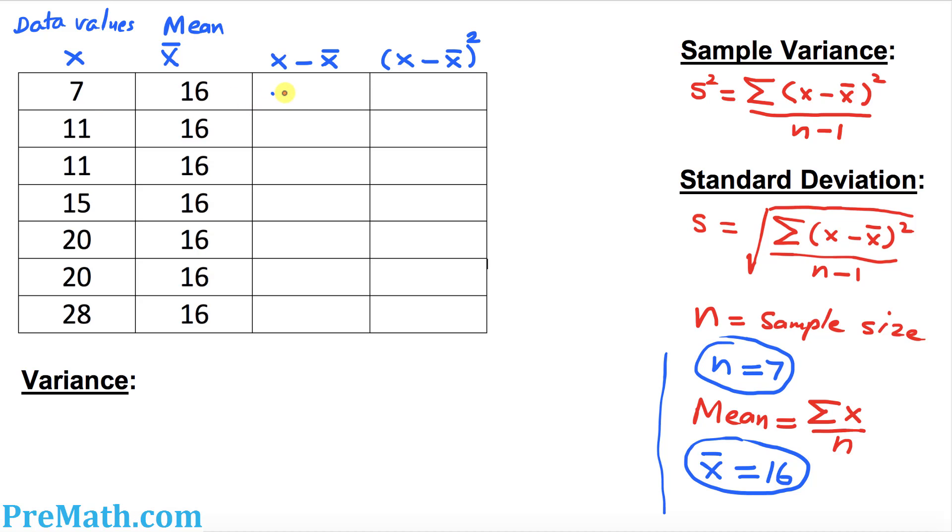7 minus 16 is negative 9. Likewise, 11 minus 16 is negative 5, 11 minus 16 is again negative 5, that's negative 1, this is 4, this is 4, this is 12. We just simply subtracted these two values.